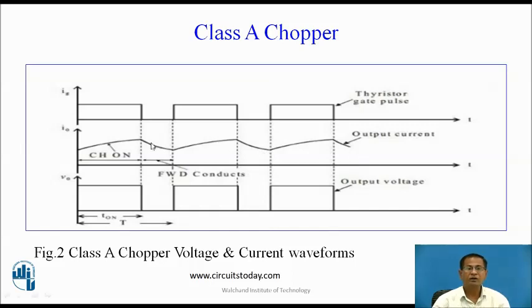These are the voltage and current waveforms for the Class A chopper. During T-on, the chopper switch is in conducting state, so input appears across the output and current rises linearly. During T-off, freewheeling action takes place, current reduces, and the load voltage is equal to zero.